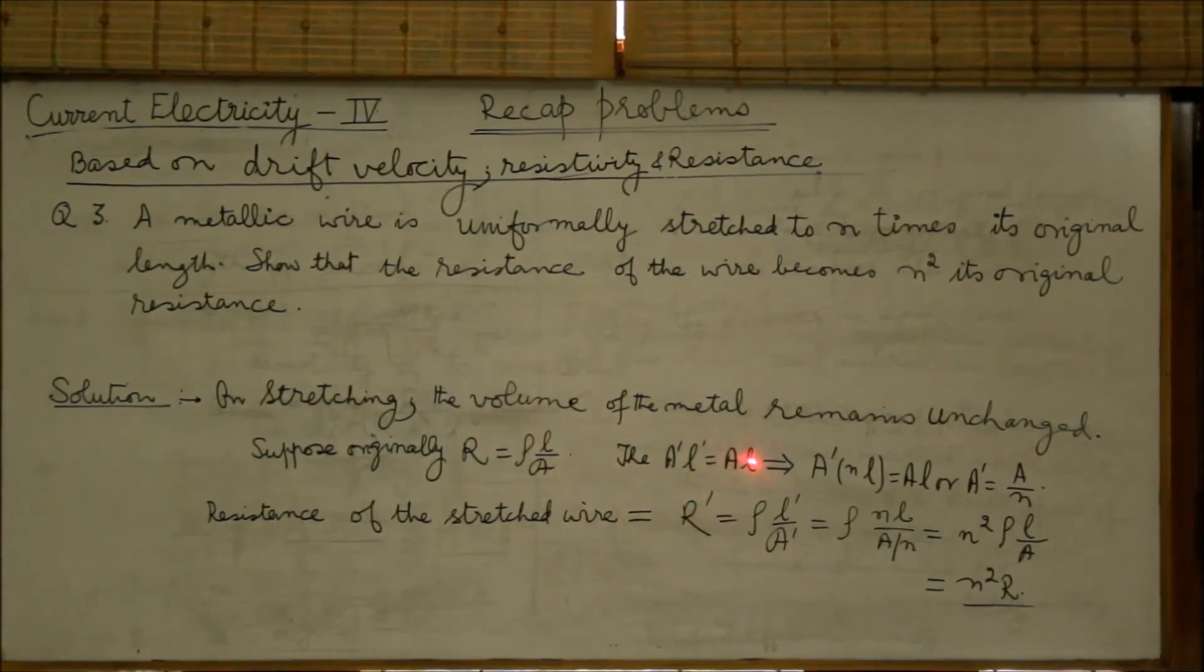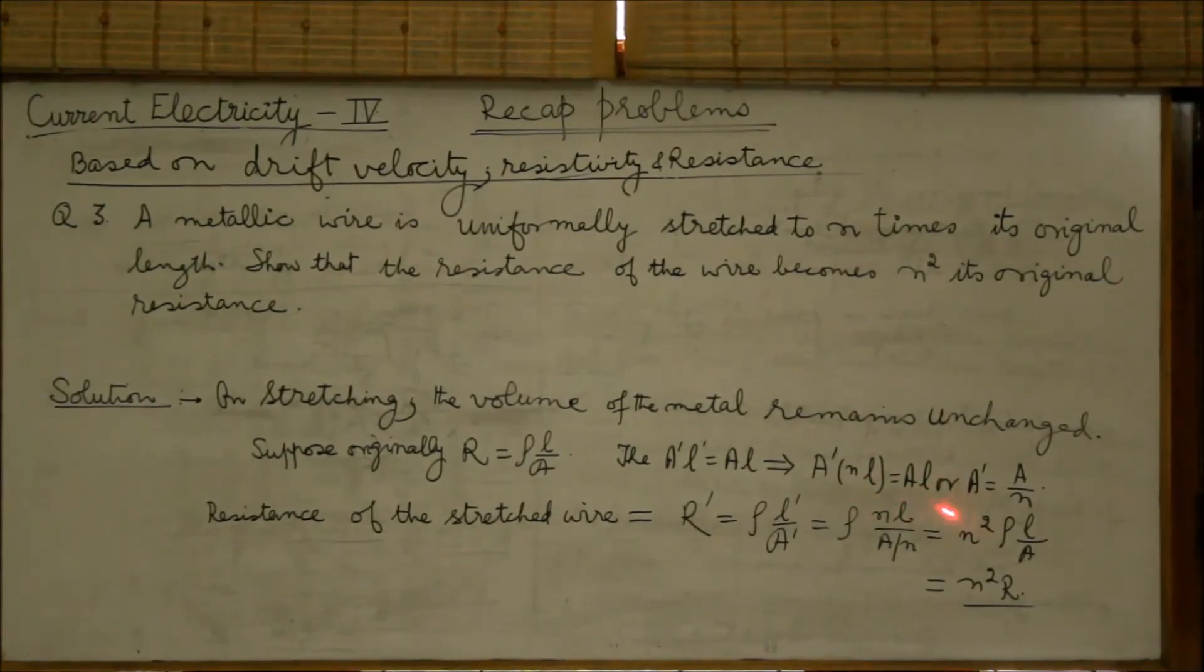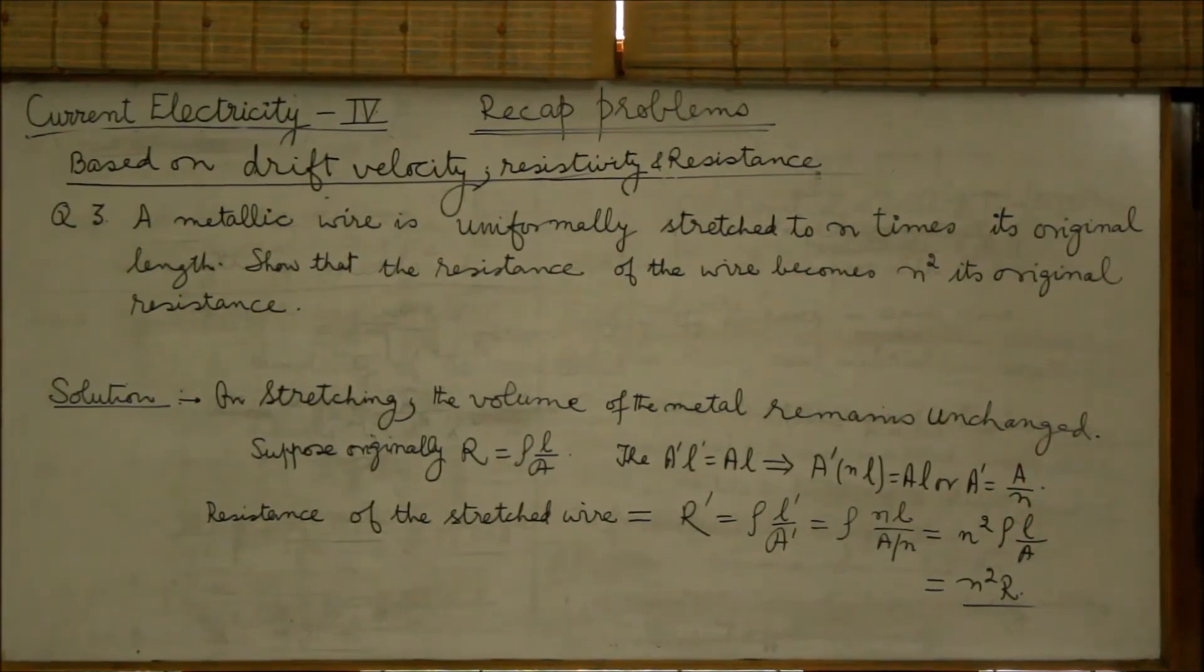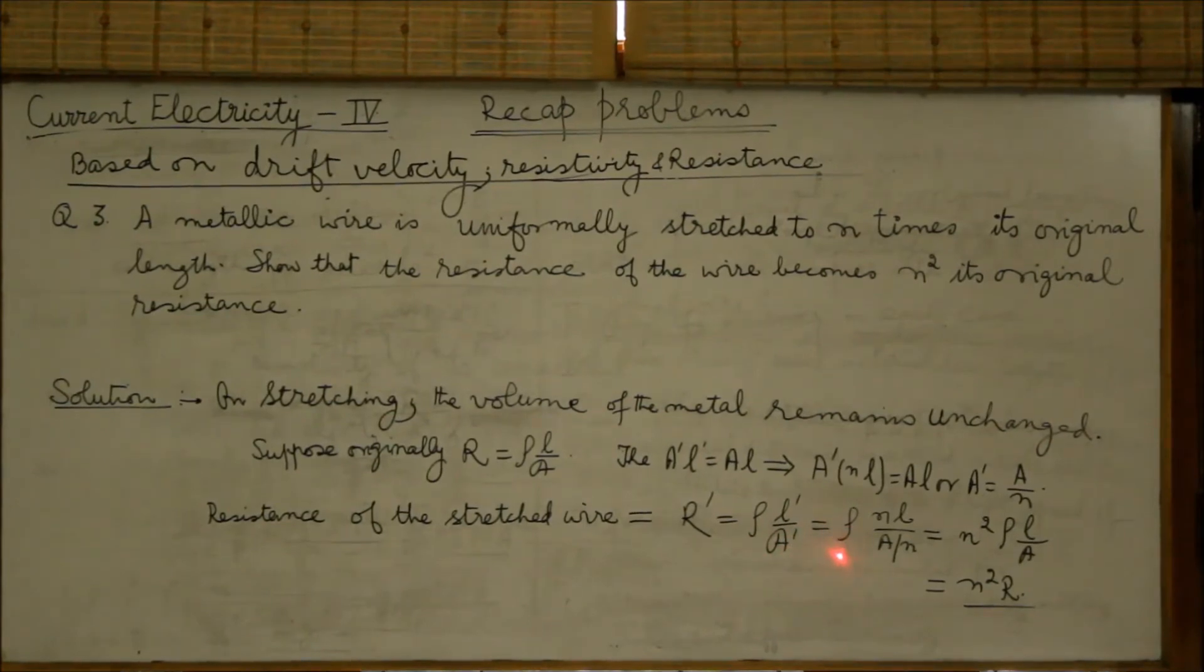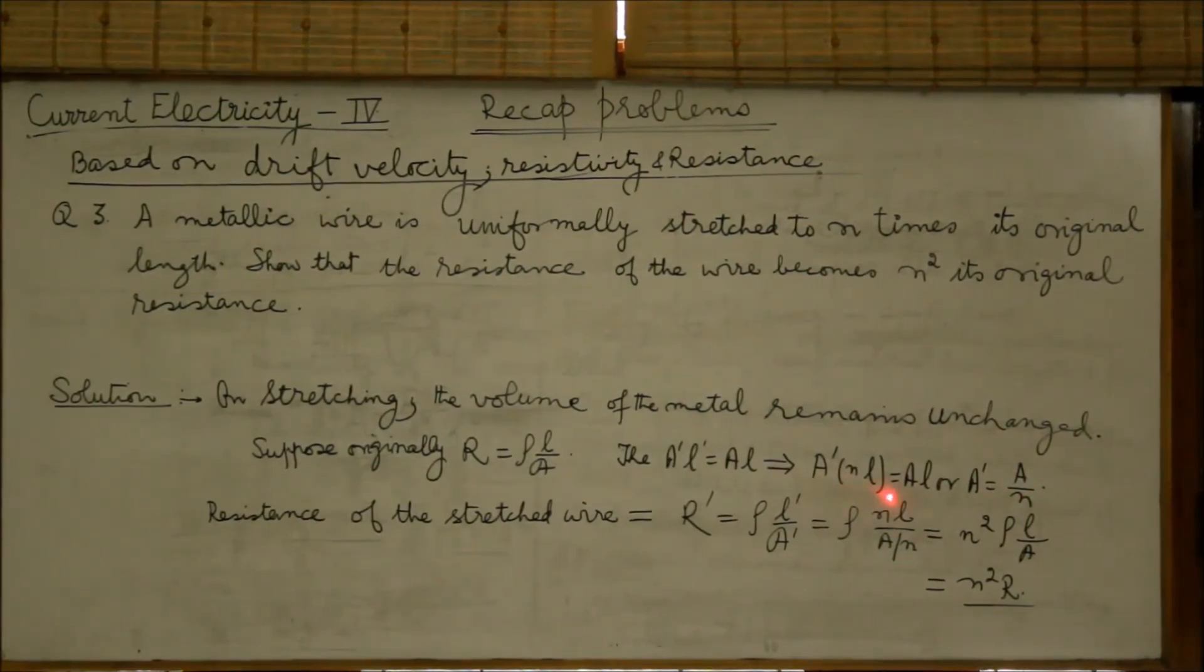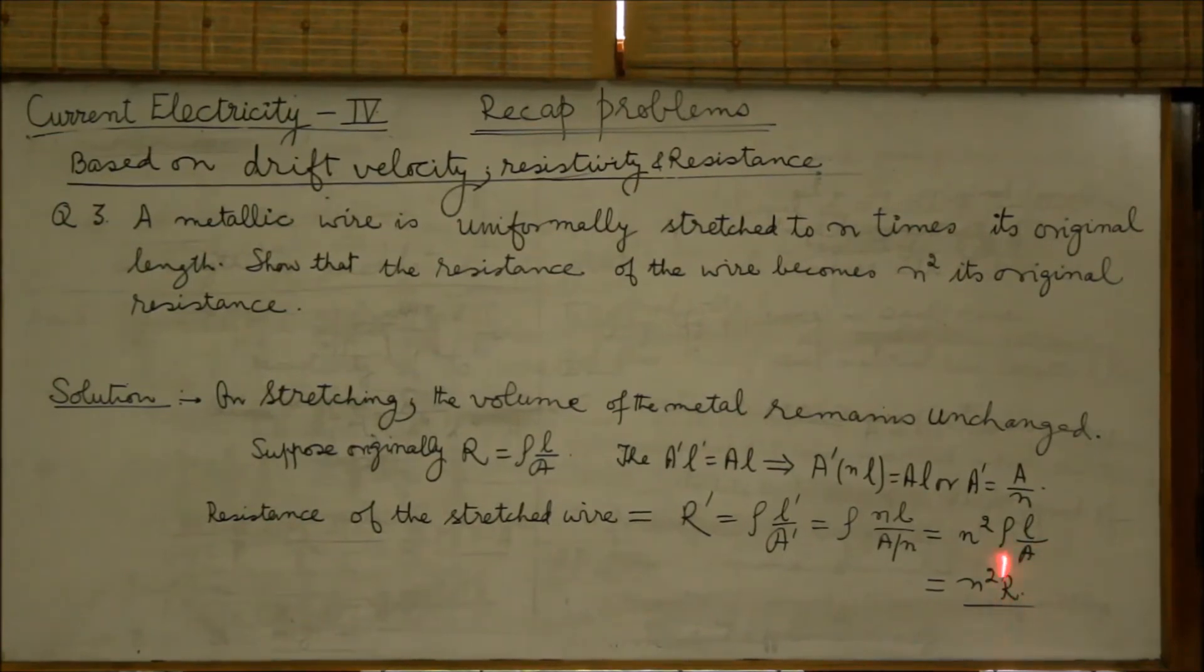This implies A dash into NL because L dash is N times the original length, equal to A into L, or A dash equal to A by N. The resistance of the stretched wire will therefore be R dash equal to rho L dash over A dash, or rho NL upon area A by N. The new values that you have calculated equal to N square rho L by A. This rho L by A is resistance of the original wire. So, the resistance becomes N square times the original resistance.